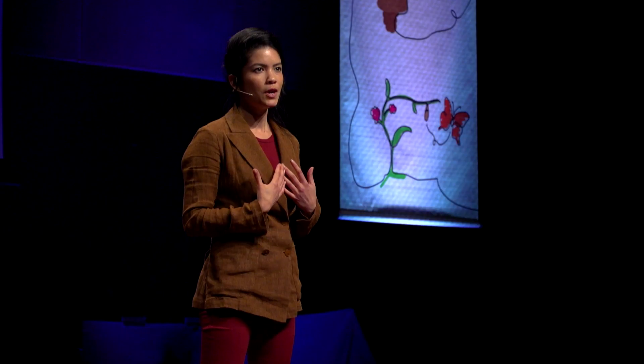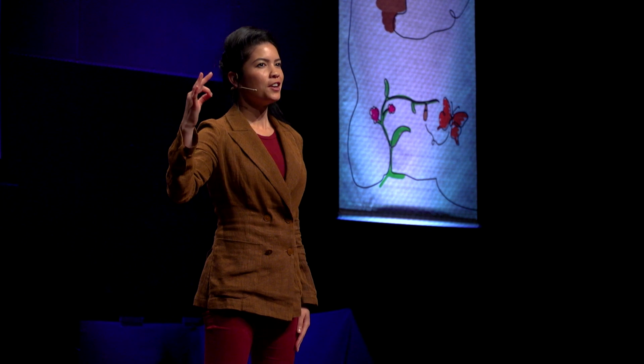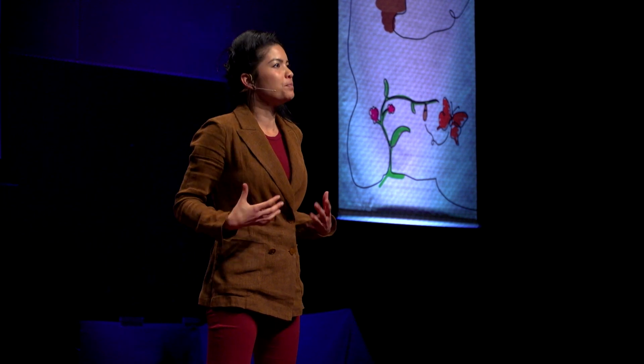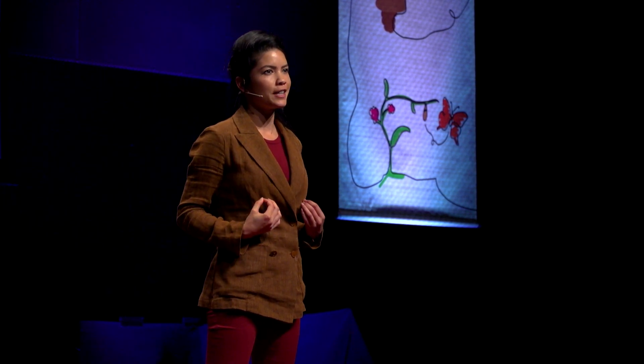But where do we start so we can create anti-fragile societies, worlds, and systems around us? It starts with us as individuals — fostering, unlearning, creating our own anti-fragility. So I want to share with you just three strategies that can help us build more anti-fragility into our lives and ourselves.